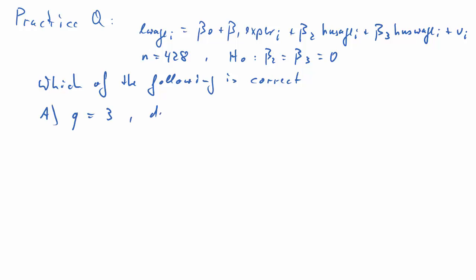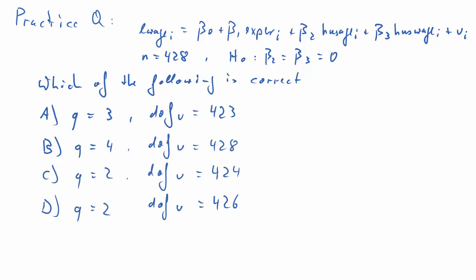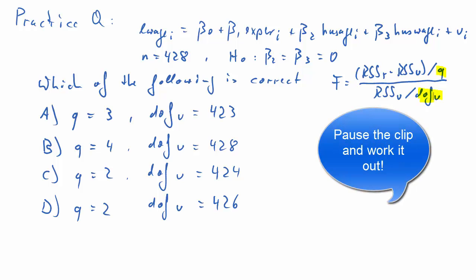And I'm basically asking just for the degrees of freedom. Q, remember, that's the number of restrictions, and degrees of freedom of the unrestricted model. So option A, Q is 3, degrees of freedom of the unrestricted model, 423. And you have all these other options available to you. So which one is the correct one? Remember, the degrees of freedom are not only relevant to get the critical values, but also relevant in the calculation of the test statistic, because the Q and the DOFU appeared in the test statistic. So pause the clip and try and work it out for yourself.